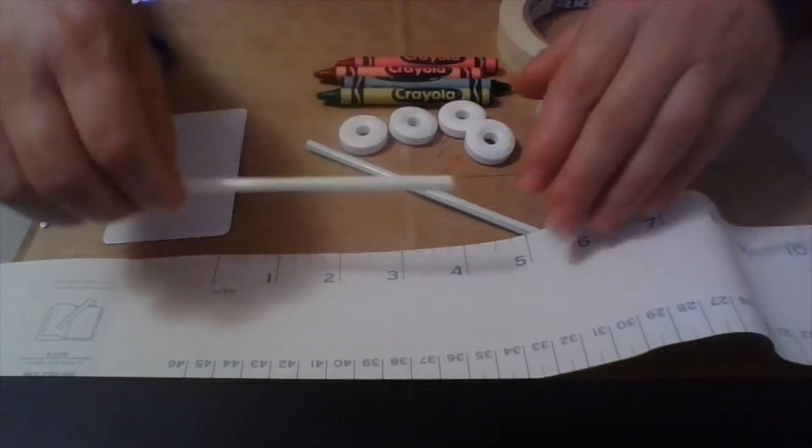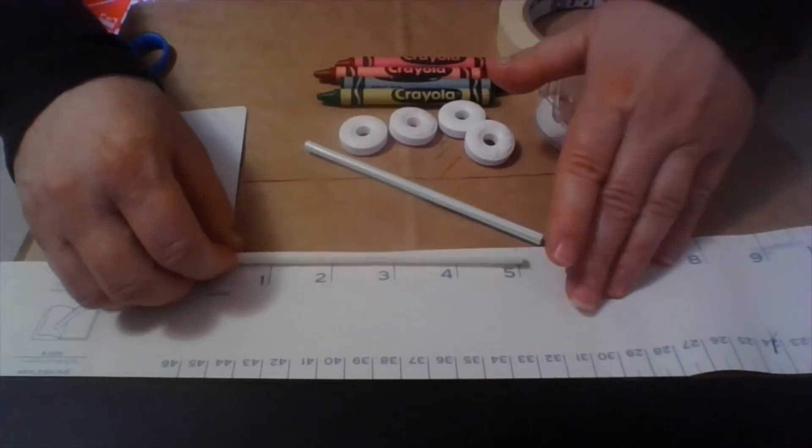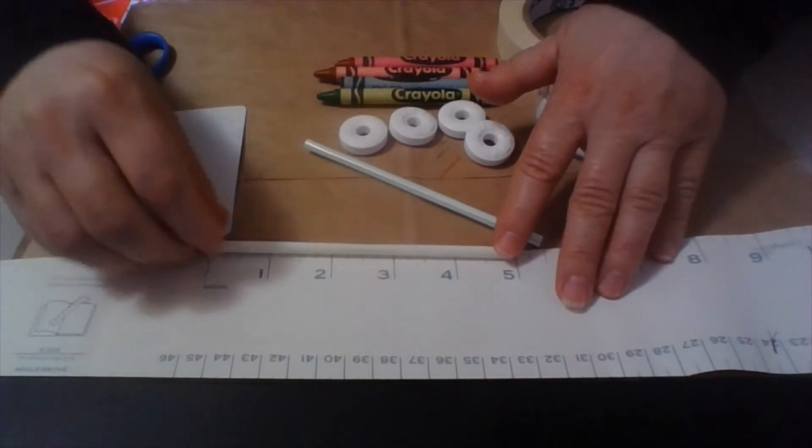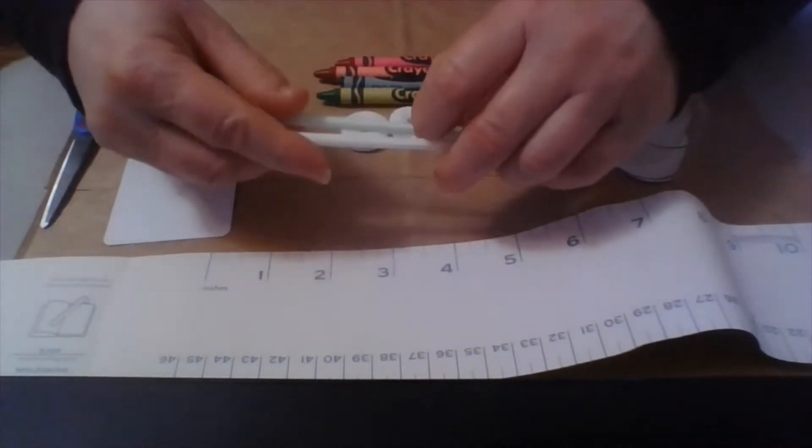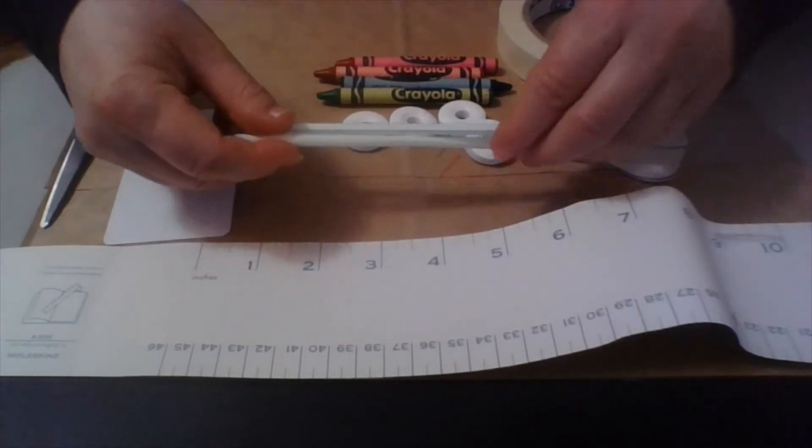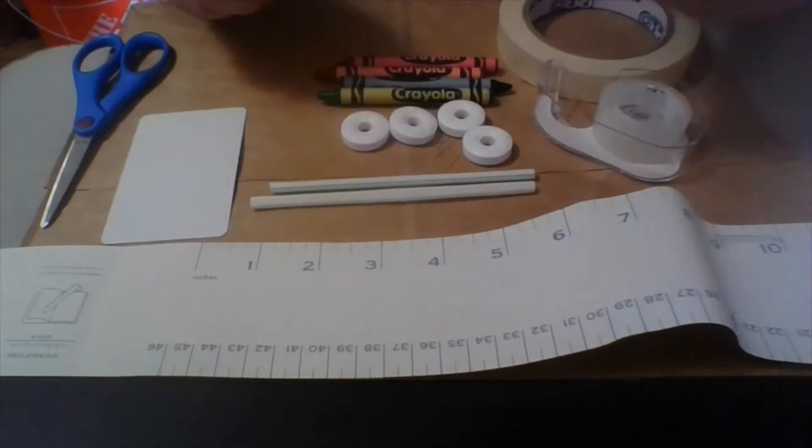So what I did is I took my straw and it was long and I cut off the bendy part at about five inches. So then I just cut two straws and then I saved the bendy part for later. You don't want to use the bendy part because you don't want a bendy axle for your wheels.